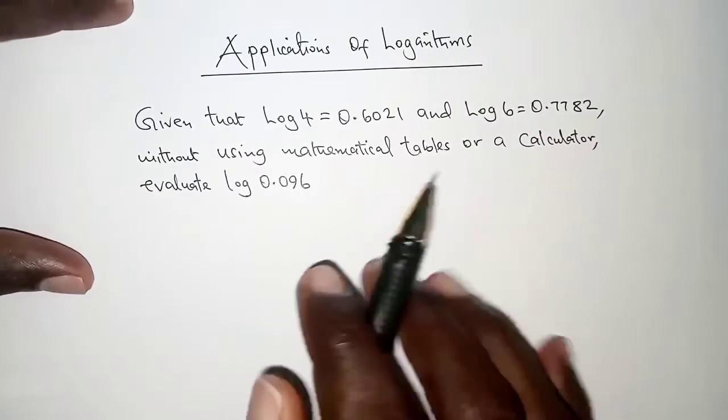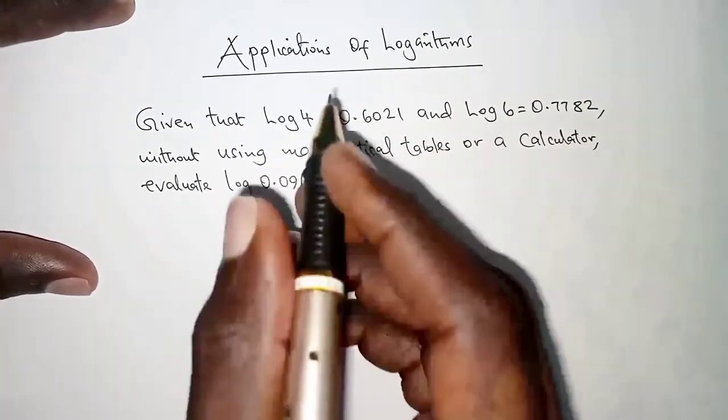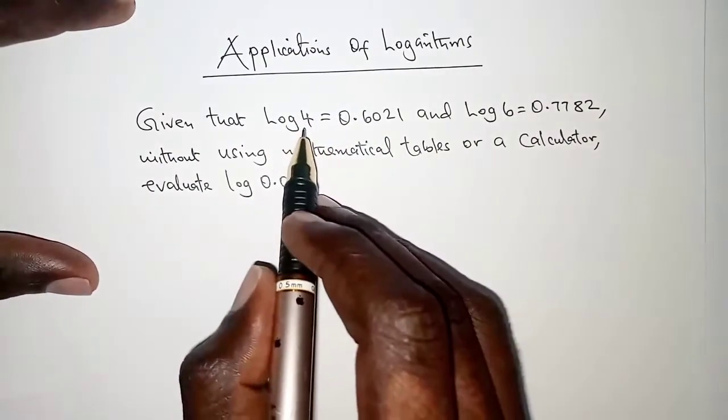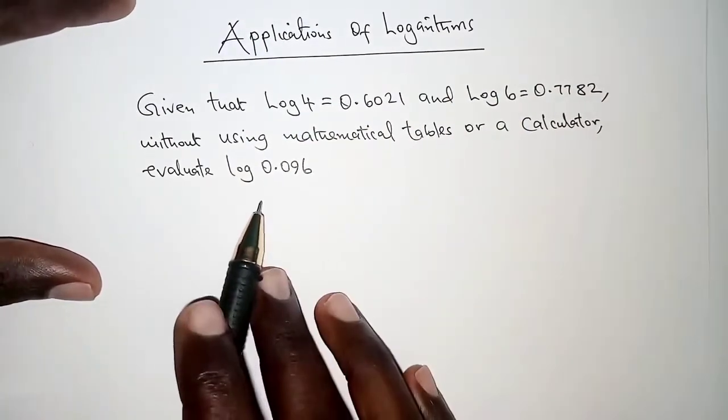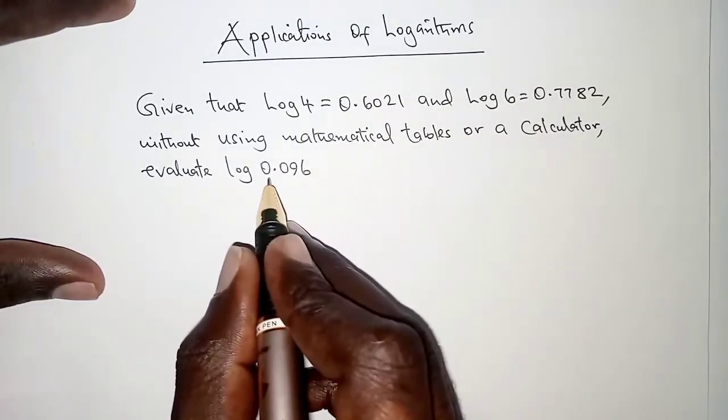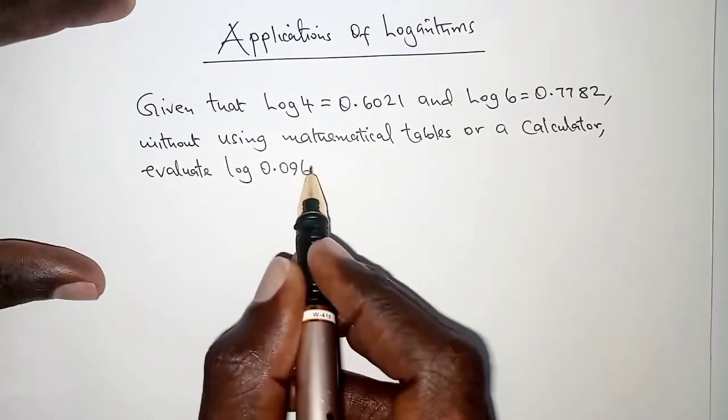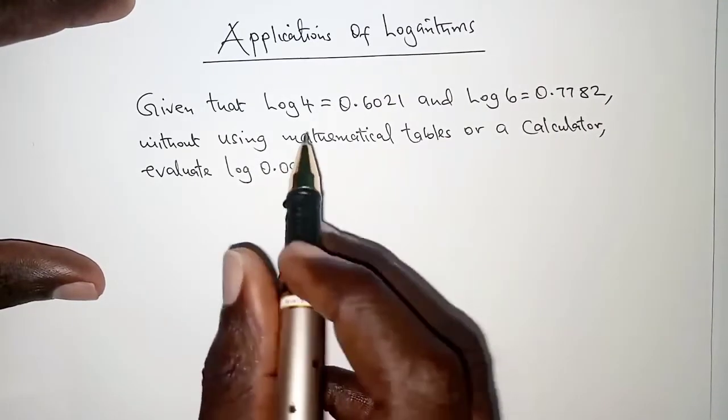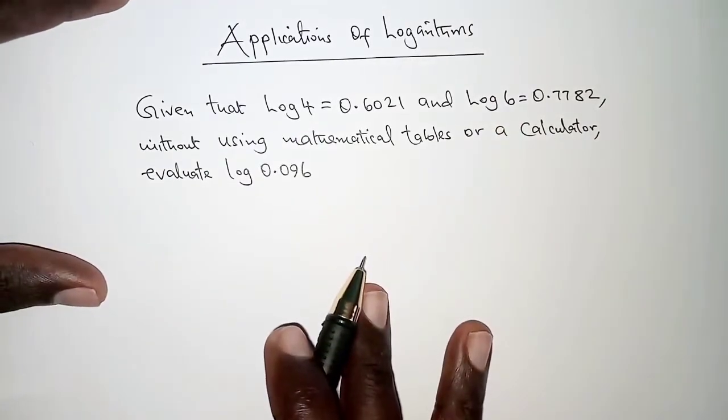We are given log 4 and log 6, which are very important and will help us approach this problem. We are told to find log 0.096, and we need to relate the number 0.096 to 4 and 6.